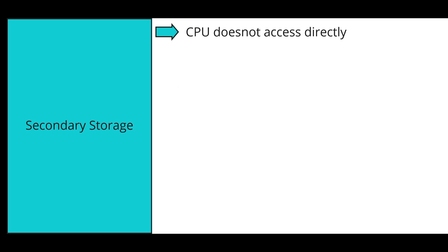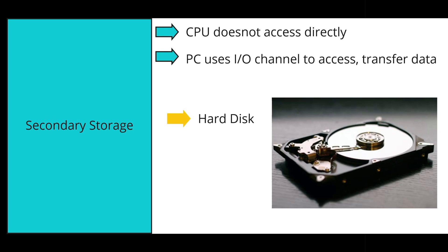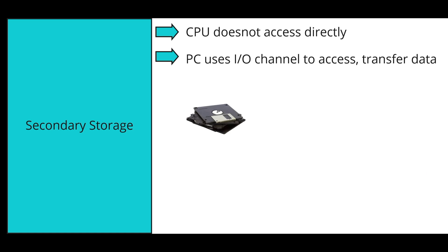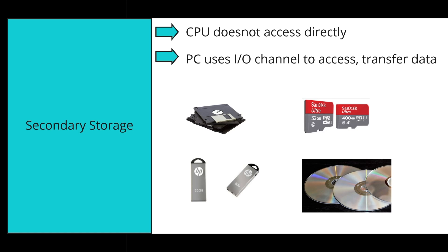Secondary storage is storage that the CPU does not have direct access to. The PC or computer uses an I/O channel to access and transfer the data. Types of secondary storage include hard disks, floppy drives, memory cards, USBs, and CD and DVD ROMs.